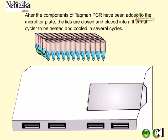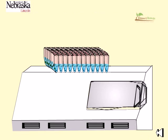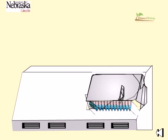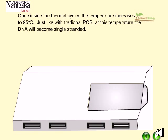After the components of TaqMan PCR have been added to the microtiter plate, the lids are closed and the plate is placed into a thermal cycler to be heated and cooled in several cycles. Once inside the thermal cycler, the temperature increases to 95 degrees Celsius — just like traditional PCR — at which temperature the DNA will become single-stranded.